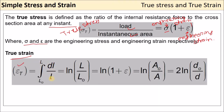True strain is change in length divided by the instantaneous length, and this length changes with respect to time — increasing under tensile load and decreasing under compressive load. Integrating from l₀ to l, the integral of dl/l gives ln(l/l₀) by simple integration.